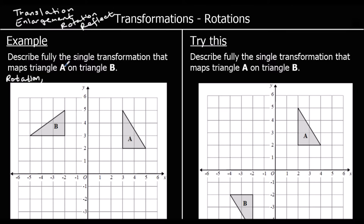We need to give two more bits of information: how many degrees it's turned, and in which direction it has turned. So, shape A to shape B, it's 90 degrees anticlockwise. We could also say it's 270 degrees clockwise, but 90 degrees anticlockwise. And we also need to know the centre — where it's been rotated about.